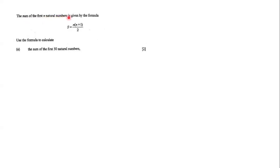The sum of the first n natural numbers is given by the formula S = n(n+1)/2. Use the formula to calculate the sum of the first 50 natural numbers.